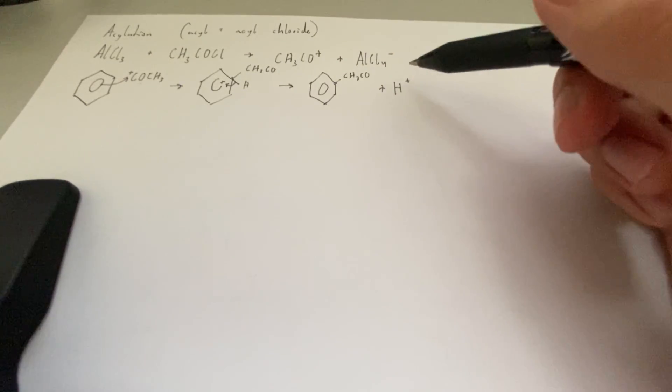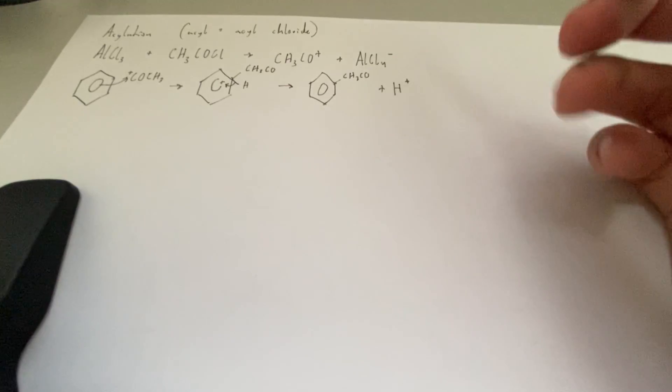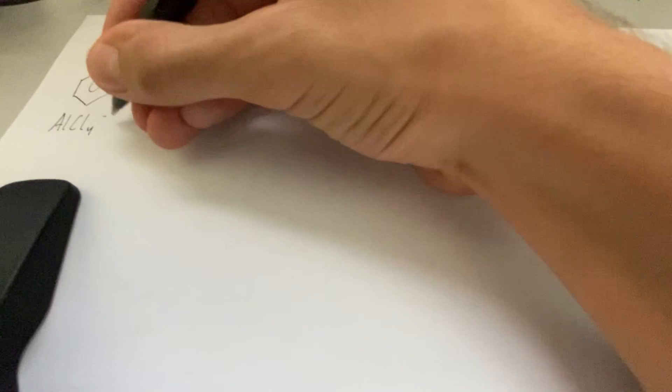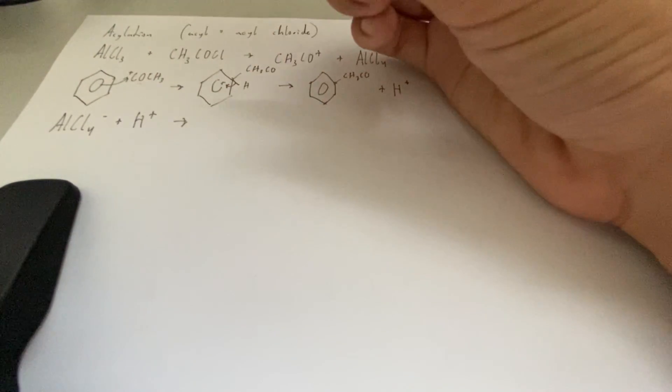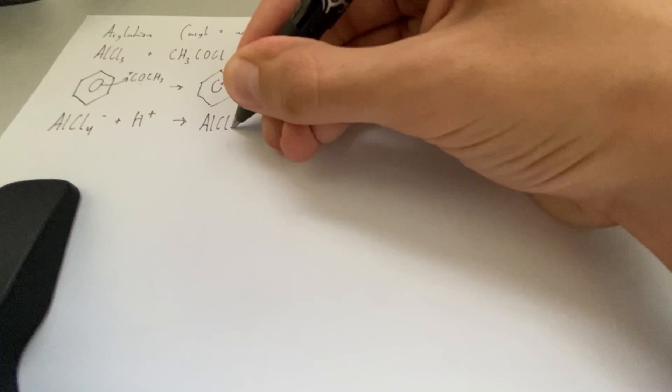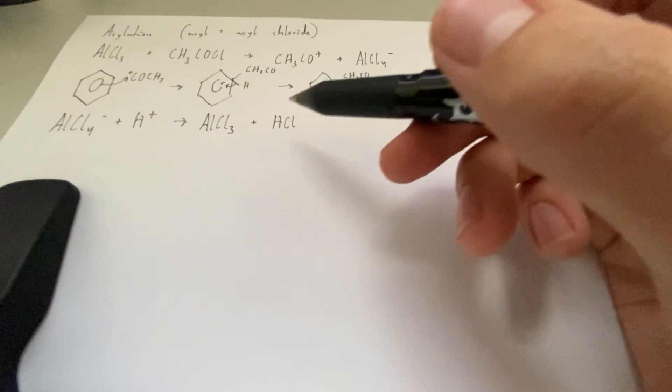And then finally, we're going to reunite this with AlCl4 minus. So that gives us our catalyst back, and we get hydrochloric acid.